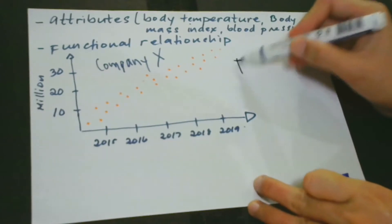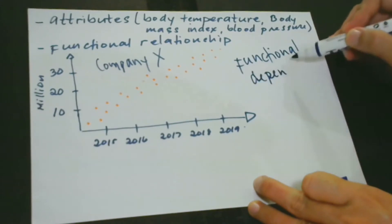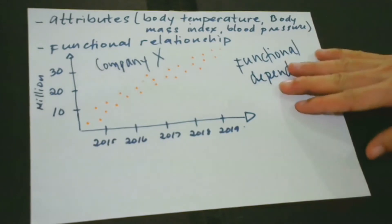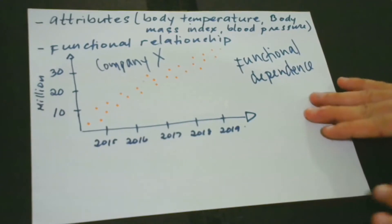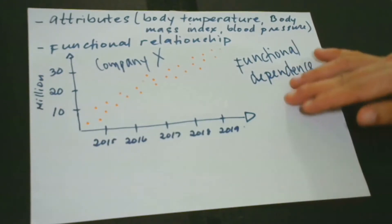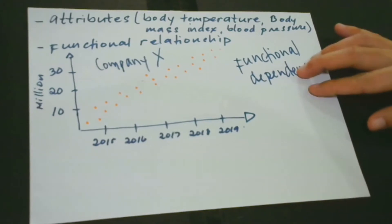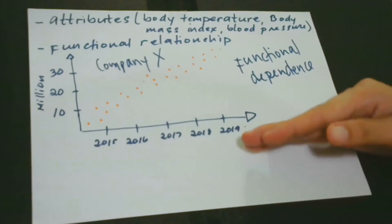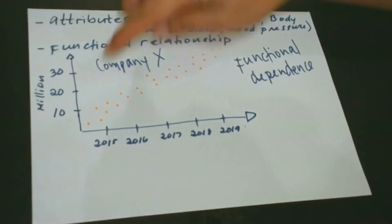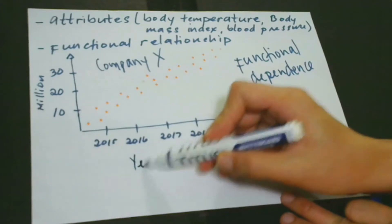Functional dependence shows a relationship that exists when one attribute uniquely determines another attribute. This is only relevant if it exists — there is nothing to speak of when this relationship does not exist. Here, we are concerned with identifying the functional dependence between sales and the business year, and using this model we can predict or make predictions about future sales trends.